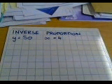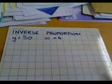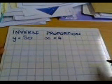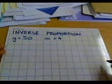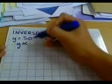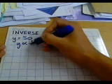We're going to look at inverse proportion. If we're given the values y equals 50 and x equals 4, and we know that they're inversely proportionate to each other, that means y is inversely proportionate to x.